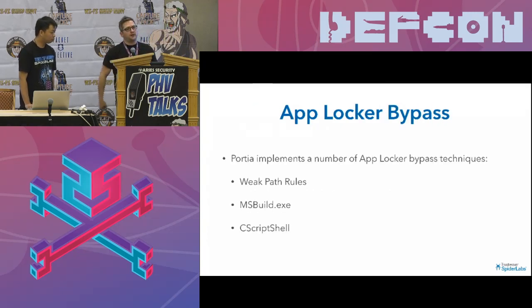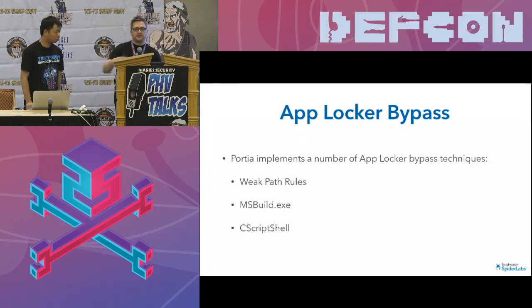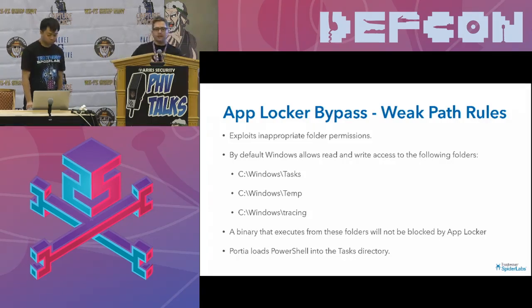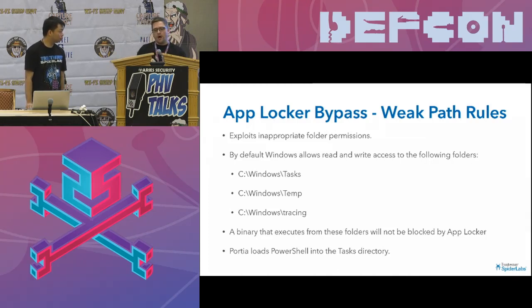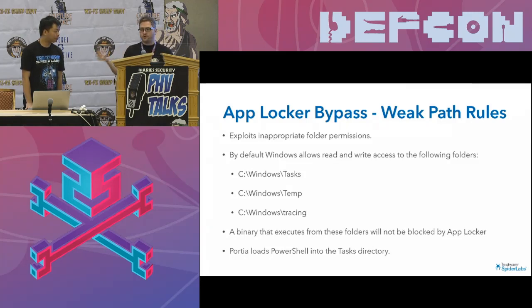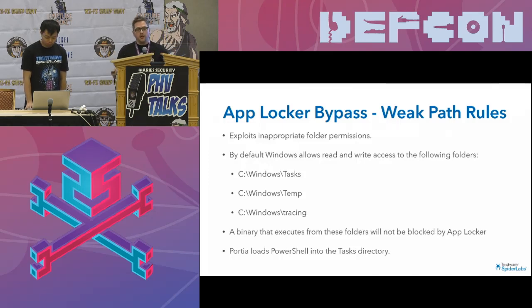The other control we frequently run up against is AppLocker. Porsche implements a number of AppLocker bypass techniques. The first one is exploiting weak path rules — inappropriate folder permissions. By default, Windows allows read and write under Windows\Tasks, Windows\Temp, and Windows\Tracing. Any binary that executes from these folders won't be blocked by AppLocker, so Porsche just loads PowerShell into the task directory and we're good to go — pretty straightforward bypass.